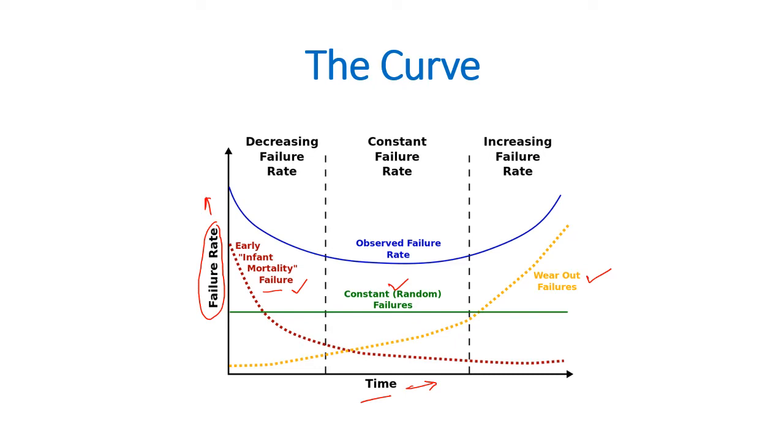So like a flattened U curve is getting formed, and this is known as the bathtub curve. As you can see, initially there is a decreasing rate of failure, then there is an almost constant rate of failure, and this is the increasing rate of failure again.